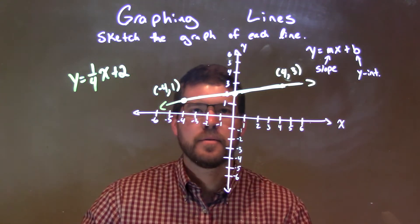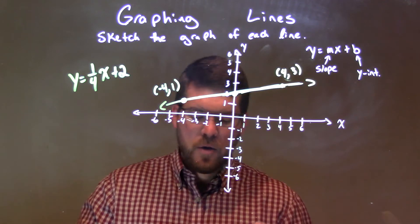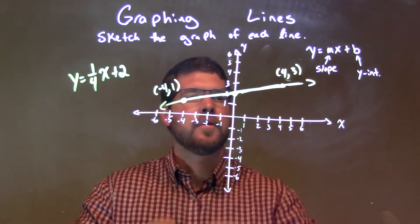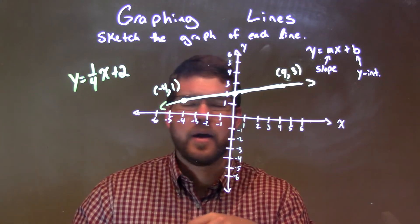And make it a nice straight line. Pretty good. Not the best, but that's all right. And there we have it. We have our final answer in our graph here for our line, y equals 1 fourth x plus 2.